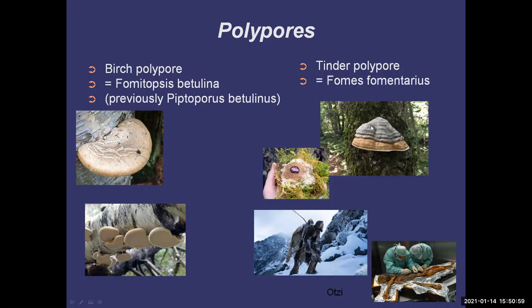Interestingly, Ötzi also had a birch polypore. Birch polypores are another very common mushroom. They're kind of beige on top and lighter underneath, with a very unique smell — not really pleasant, but not disgusting either. They are medicinal — they have immune-stimulating and anti-cancer properties, which a lot of polypore mushrooms have. They also have a skin surface that can be used as a bandage. So if you're ever out in the wild and you cut yourself, you could cut a little rectangle of the skin and use that as a Band-Aid — maybe that's why Ötzi had it on him.